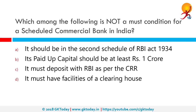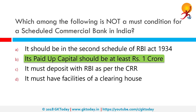Which among the following is not a must condition for a scheduled commercial bank in India? The scheduled commercial banks are those included in the second schedule of RBI Act 1934 and carry out normal banking business such as accepting deposits, giving out loans and other banking services. The minimum paid-up capital to set up a scheduled commercial bank is Rs. 5 lakh, so the option that its paid-up capital should be at least Rs. 1 crore is not true.